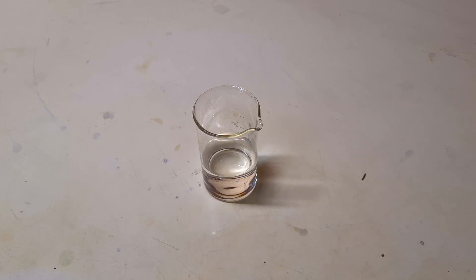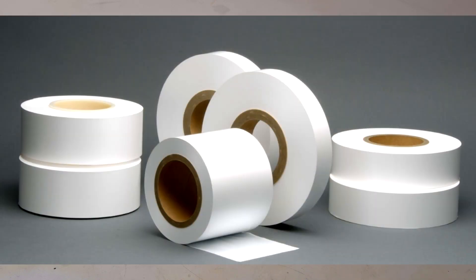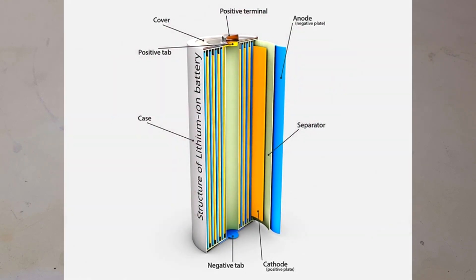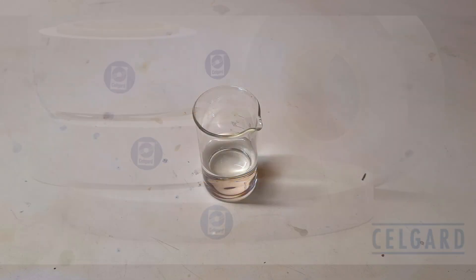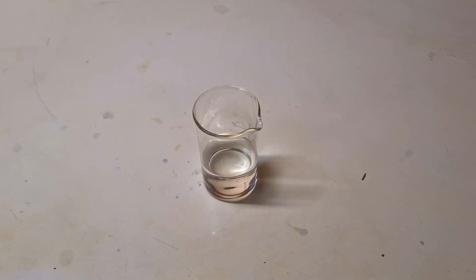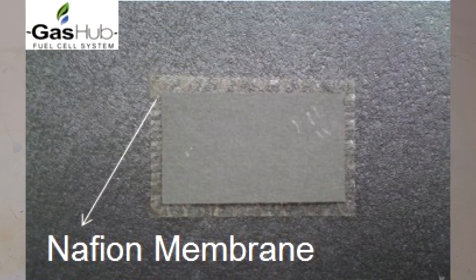And then we have also a little bit more expensive polymer separators, which are mostly used in lithium-ion batteries. And the commercial name of these polymer separators is Celgard. And then in the end we have also some really expensive membranes, which are used in fuel cells or in some flow batteries. And a good example of this membrane is Nafion.